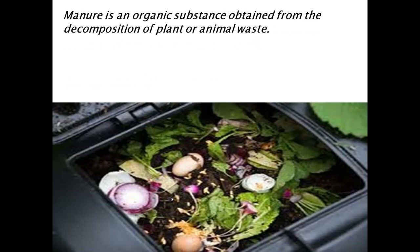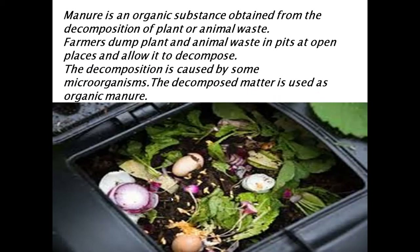Manure is an organic substance obtained from the decomposition of plant or animal waste. Farmers dump plant and animal waste in pits or at open places and allow it to decompose. The decomposition is caused by some microorganisms, and the decomposed matter is used as organic manure.